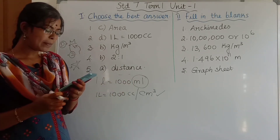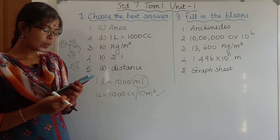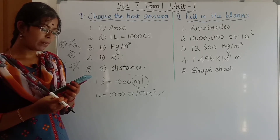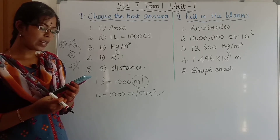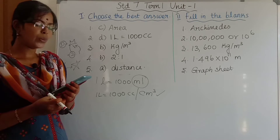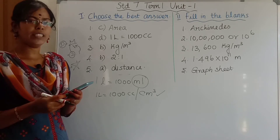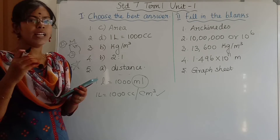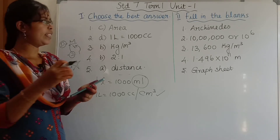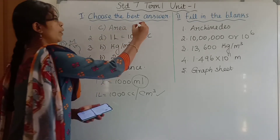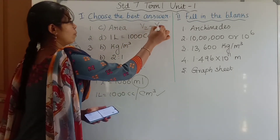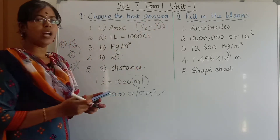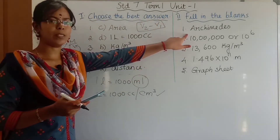Second section: fill in the blanks. First question: volume of an irregularly shaped object is measured using the law of — irregularly shaped objects are measured using a measuring cylinder, where water displacement by the stone is used. We use the formula V2 minus V1. It is the law of Archimedes principle.